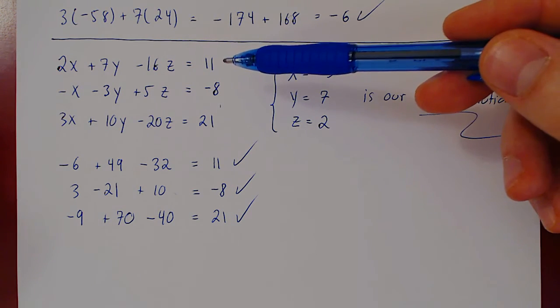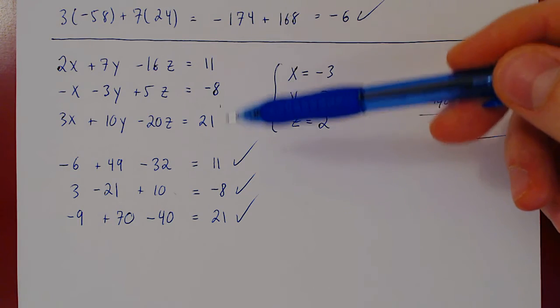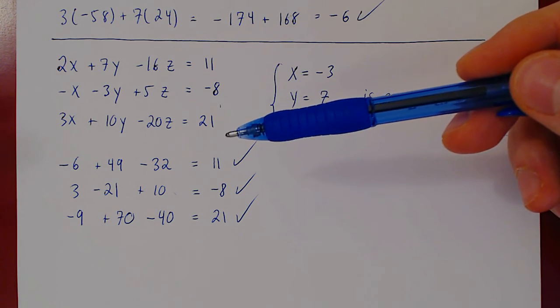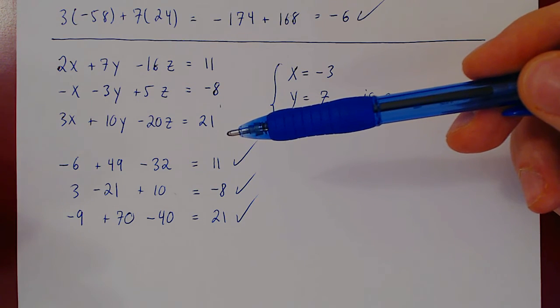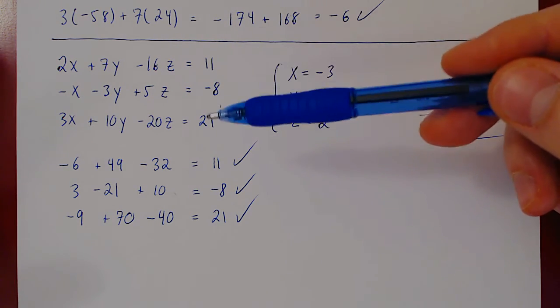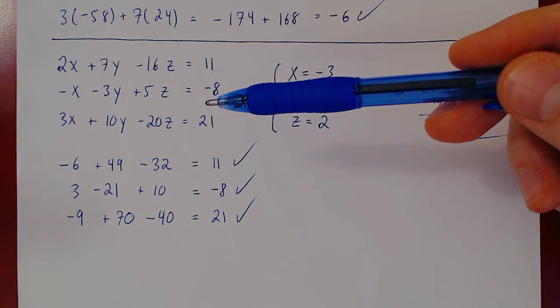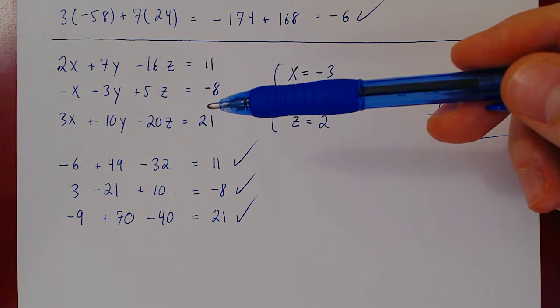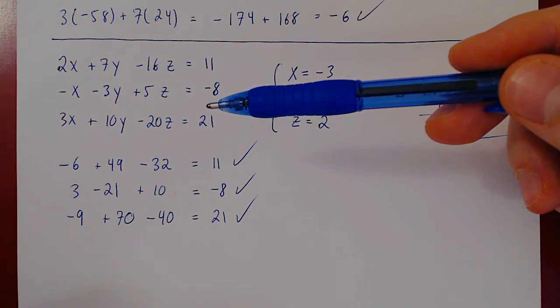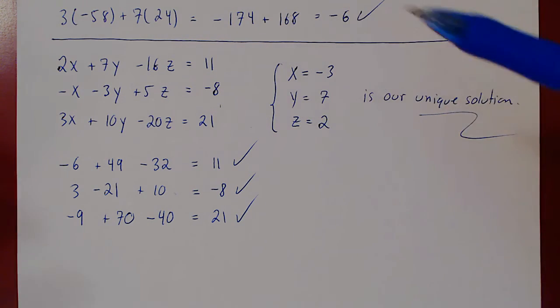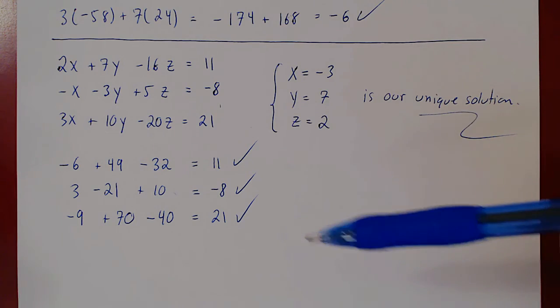But now you could say, well, what if we considered, say, a linear system in four variables and four equations? Could we do the same thing? The answer is yes. But if you think that this was bad with three equations and three variables, it would be a lot worse with four variables, four equations. What if you had five equations, five variables? This would be a ton of work. Way too many calculations and way too much writing.